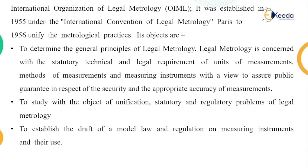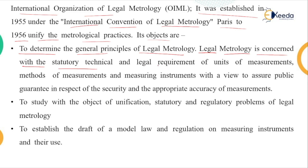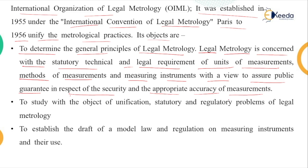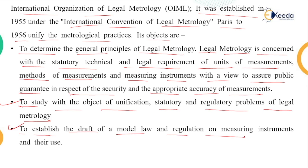The last body is OIML — the International Organization of Legal Metrology — established in 1955 under the International Convention of Legal Metrology in Paris, to unify metrological practices. Its objectives are: to determine the general principles of legal metrology, which is concerned with statutory technical and legal requirements of units of measurement, methods of measurement, and measuring instruments, with a view to assuring public guarantee of security and accuracy. The second objective is to study and unify statutory and regulatory problems of legal metrology. The third is to establish draft model laws and regulations on measuring instruments and their uses.